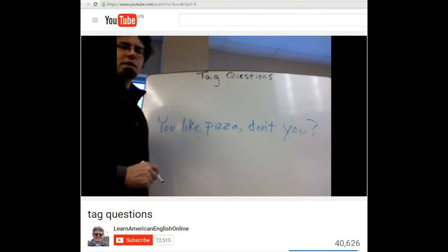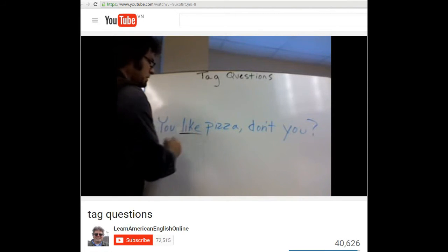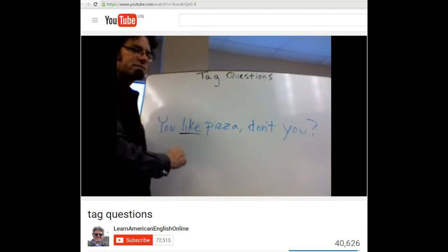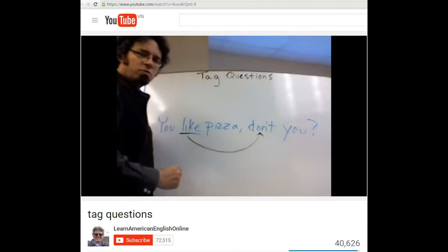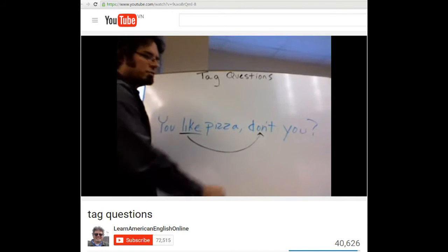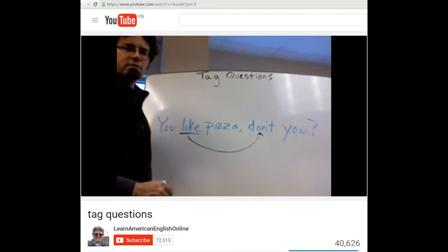Using tag questions can be especially confusing with the present tense and in the past tense. In this example, the main verb like is in the present tense. You like pizza, don't you? Use the auxiliary verb do and make it negative with not. You like pizza, don't you?